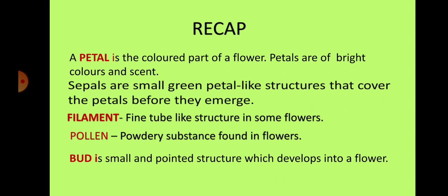Sepals are small green petal-like structures that cover the petals before they emerge. Filaments are fine tube-like structures in some flowers. A bud is a small and pointed structure which develops into a flower.